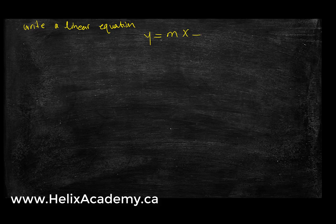Now that we understand that, let's try to practice how to write a linear equation. As we talked about, we have y equals mx plus b. There are a few different ways to write an equation for a line, depending on what you're given and what you're working with. For instance, you may have some points on a line, or you drew the line that best fits data points you were given.